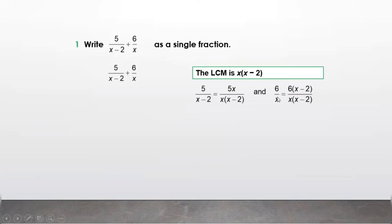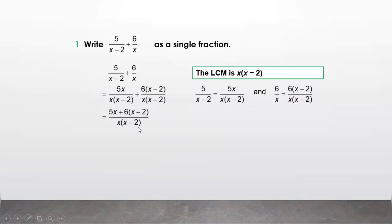For 6 upon x, the denominator is x, so we need one more factor of (x minus 2). We multiply numerator and denominator by (x minus 2). Now we add the equivalent algebraic fractions — when the denominator is the same, we just keep the denominator once and add the numerators. Let us expand the brackets.